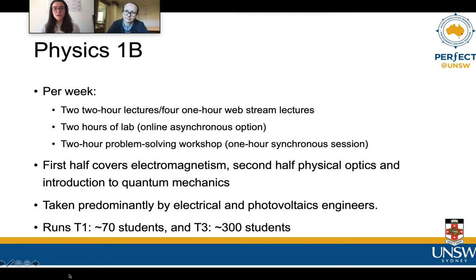So a little bit of context. What is Physics 1b? Per week, Physics 1b students have two two-hour lectures or four one-hour web stream lectures per week. They have two hours of lab with an online asynchronous option for COVID-19 times, and they have a two-hour problem-solving workshop when things are face-to-face, but when we moved everything online that became a one-hour synchronous session. The first half of Physics 1b covers electromagnetism whereas the second half covers physical optics and an introduction to quantum mechanics.